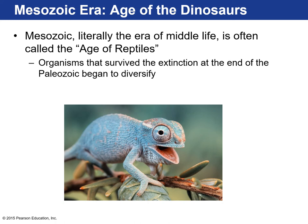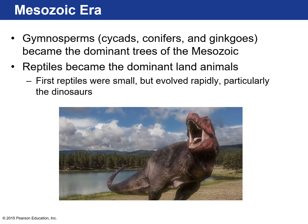That diversification of reptiles led to absolute monsters like the T-rex and other large herbivores — dinosaurs existed for about 160 million years. In terms of plant life, gymnosperms started to show up: cycads, conifers, and ginkgos. These trees release seeds into the air — they didn't require water — so they could travel around and find drier areas to plant trees. Reptiles became the dominant land animals and evolved rapidly.